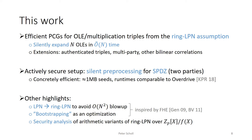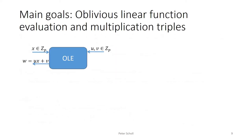Our most efficient constructions also rely on new arithmetic variants of ring LPN over polynomial rings. Since these hadn't been studied previously, we also provided new security analysis to improve our confidence in these assumptions. Our main goal will be to construct PCGs for the Oblivious Linear Function Evaluation, or OLE, and multiplication triple correlations.